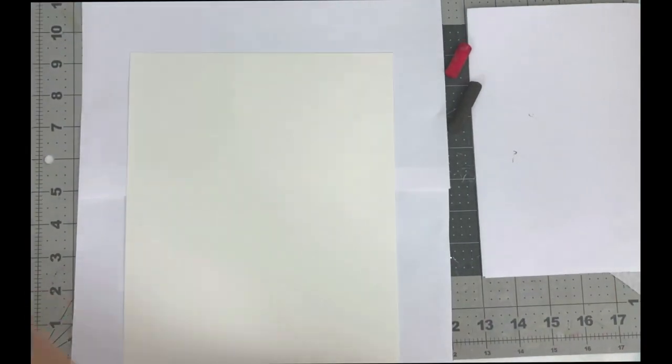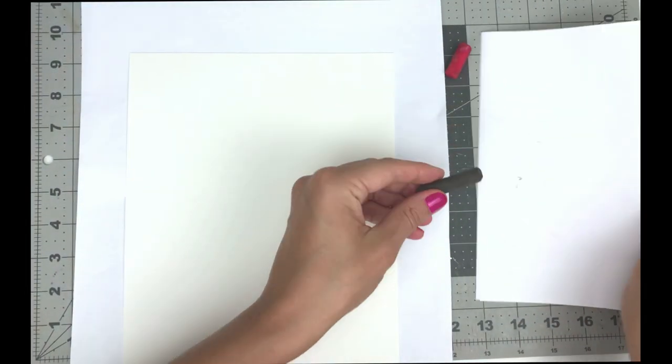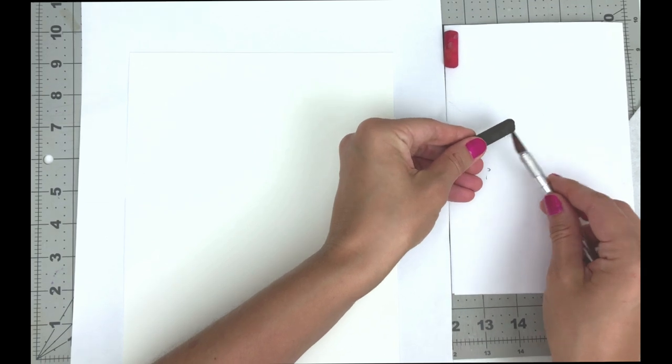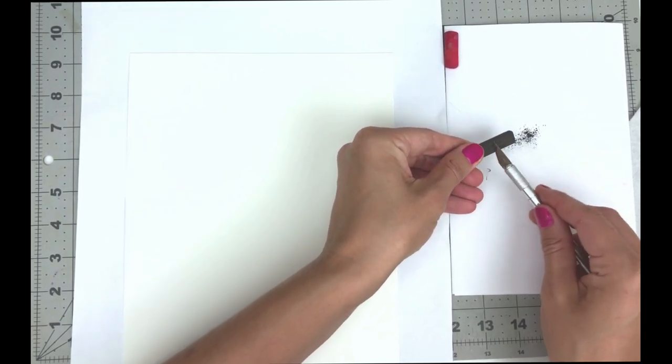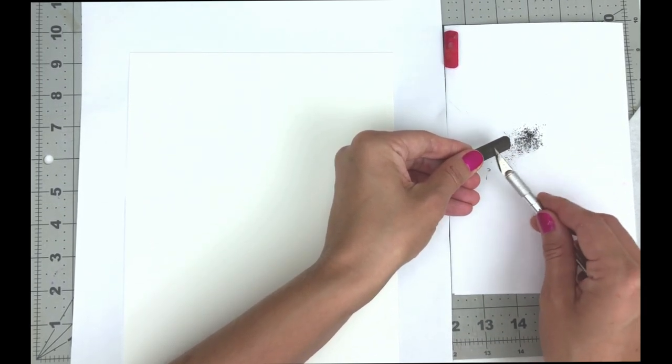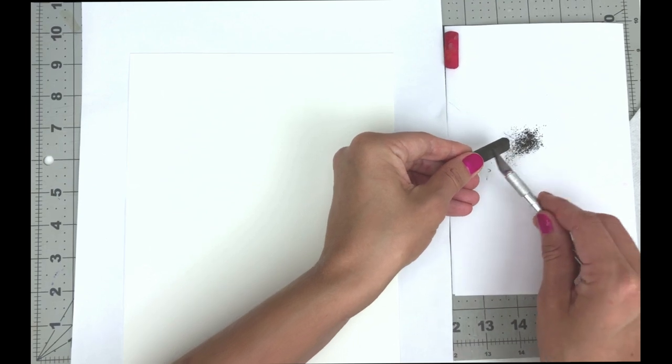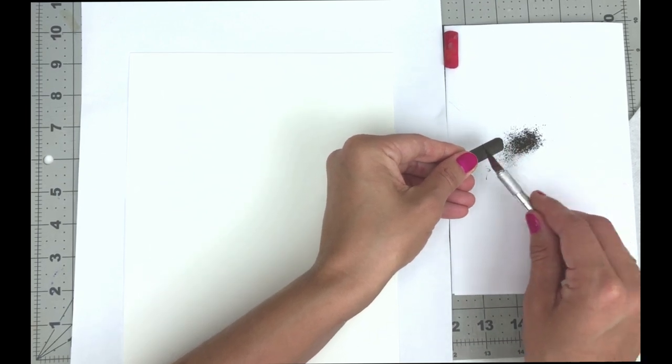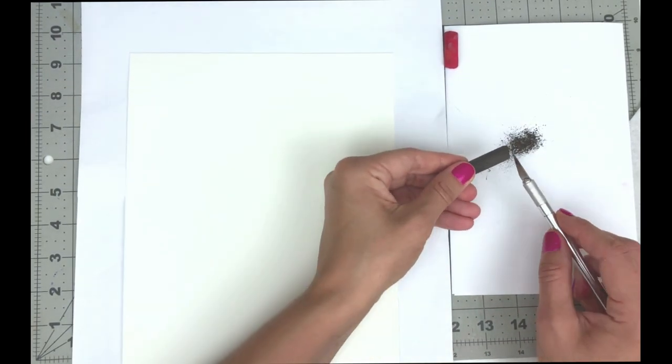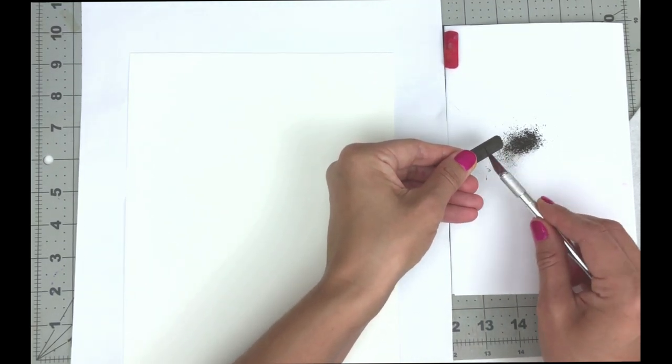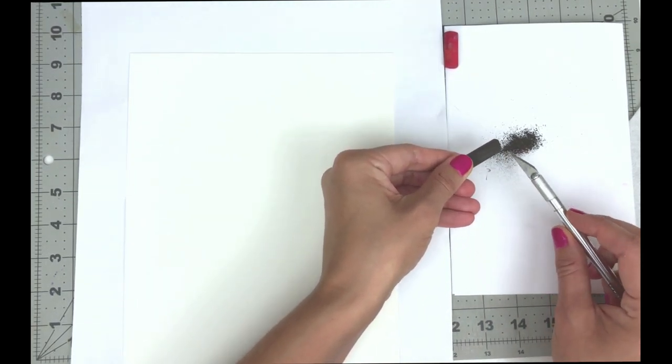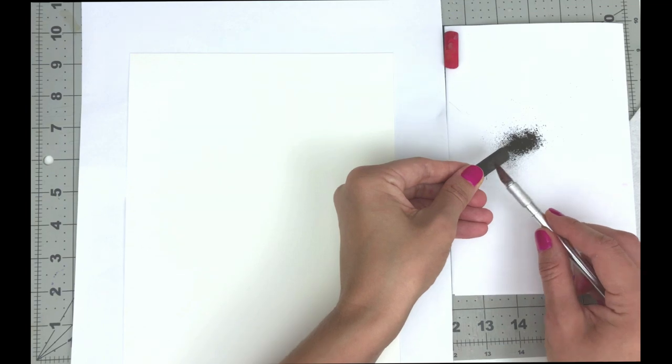After you've chosen your colors, just start to scrape away with your craft knife this pastel. For this you can use any paper sheet which you can put in the trash after you finish.